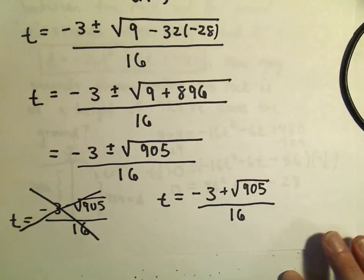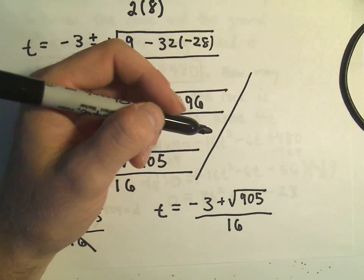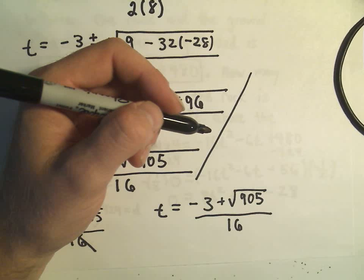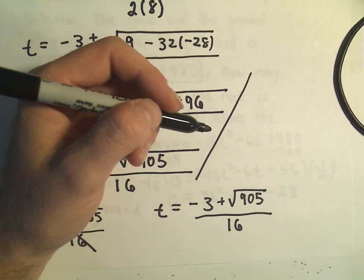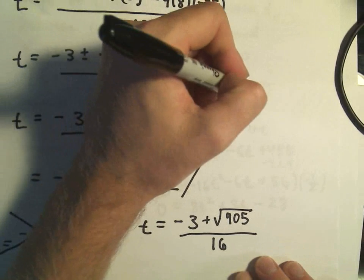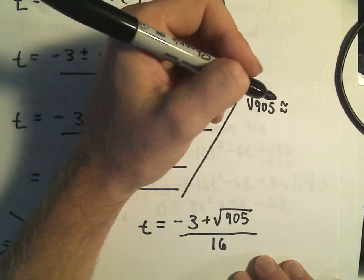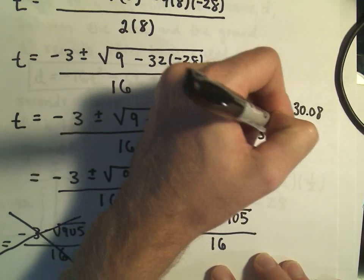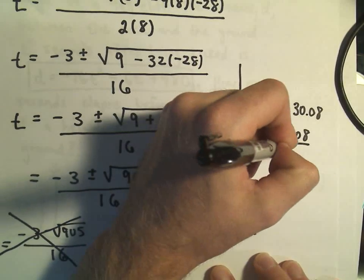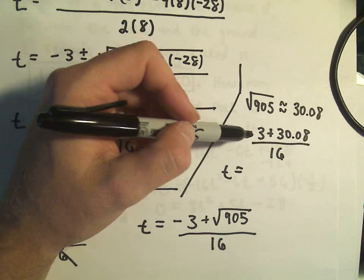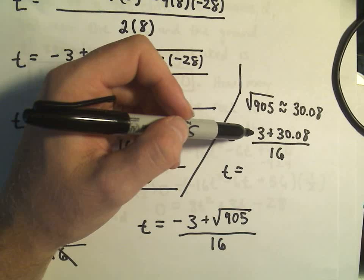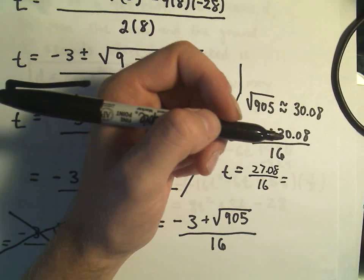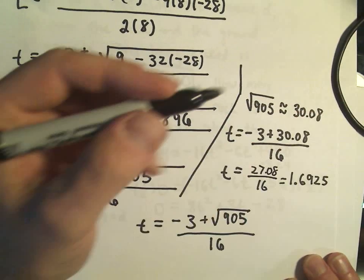What I'm going to do here is I'm simply going to approximate the square root of 905, so I'm going to use a calculator again. I'm getting the square root of 905 to be roughly equal to 30.08. So really it says t is going to be negative 3 plus 30.08 divided by 16, so if we take this 30.08, if we subtract away 3, obviously 27.08 over 16, but what this reduces to is going to be 1.6925 as my answer.